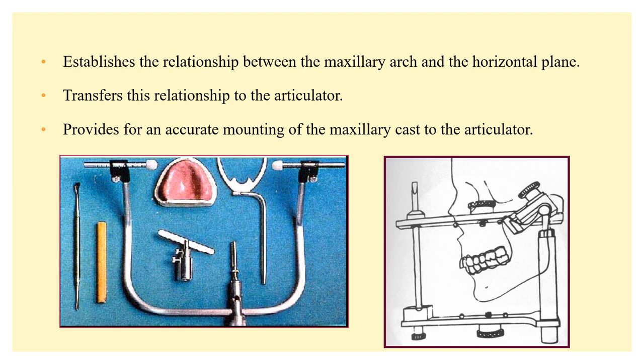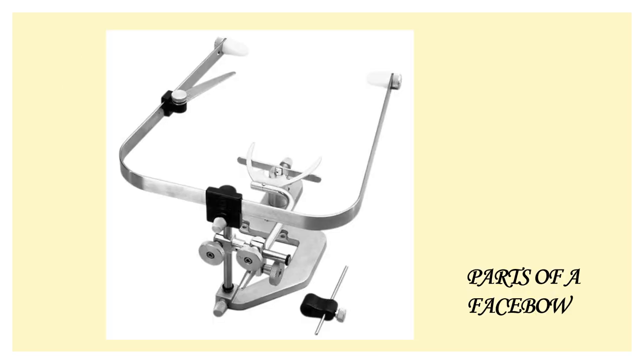In your orientation relation you are establishing a relationship between the maxillary arch and the horizontal plane, and the same relation is transferred to the articulator. This provides an accurate mounting of the maxillary cast to the articulator, and hence the relation of the mandible to the maxilla is also more accurate.